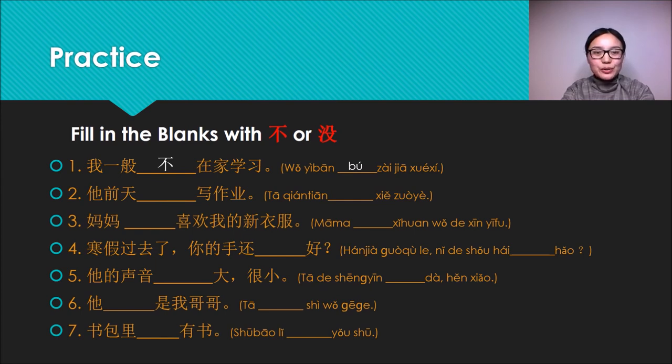Next one, we use 没. Yes! 他前天没写作业 (He didn't do his homework the day before yesterday). So this sentence is about a situation that hasn't happened, so we use 没 to clarify it. Next one, we use 不. 妈妈不喜欢我的新衣服 (My mom dislikes my new clothes). So this sentence is about a subjective wish, so we use 不 to negate.